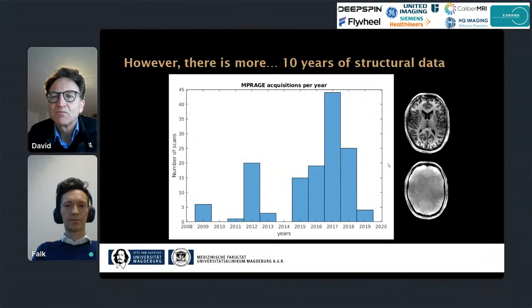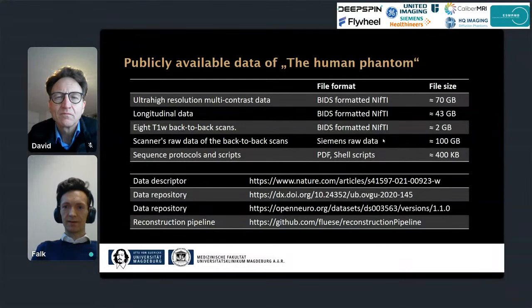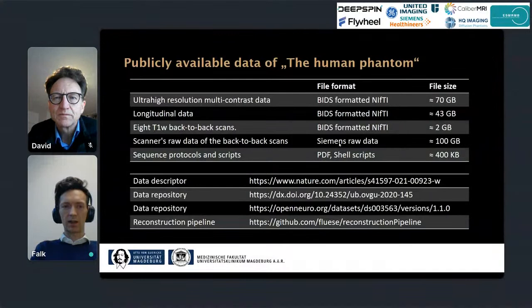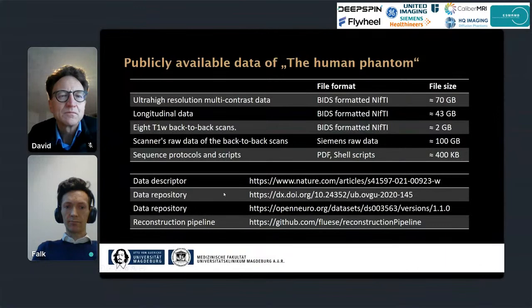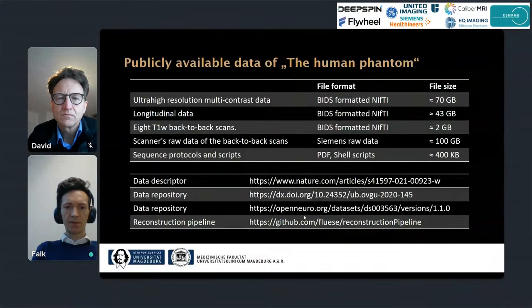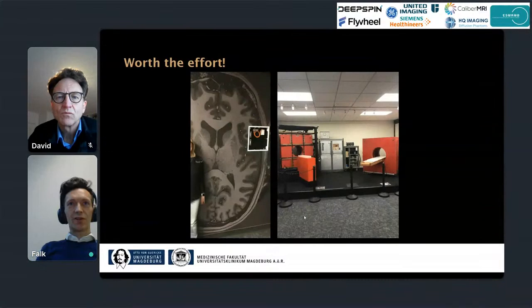All of these data are publicly available in as open a format as possible. The imaging data is structured according to BIDS. Raw data from an eight-scan back-to-back acquisition is available in Siemens raw data format for use in the reconstruction pipeline I put together. We also included all sequence protocols and scripts used to generate the data. The data descriptor is published in another Scientific Data article, the repository is mirrored at our university and OpenNeuro, and the reconstruction pipeline is available in a GitHub repository.